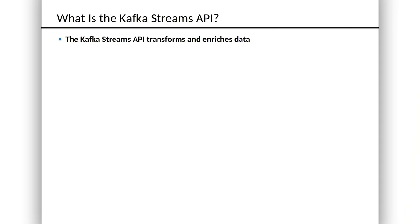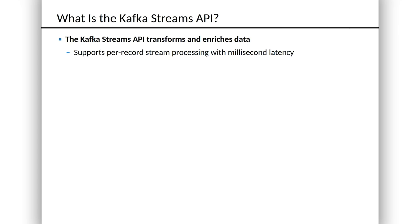The Streams API is a system for transforming and enriching these streams of data. It supports per-record stream processing — there is no micro-batching going on here at all. Every record that comes into a stream is processed and considered on its own, and that can get you to millisecond latency in a system that's tuned well.